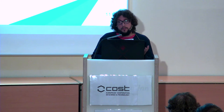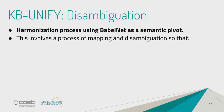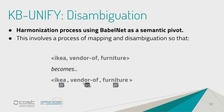We wanted to take all these heterogeneous sources of knowledge and filter them into a representation that BabelNet speaks. So the triple 'IKEA, vendor of, furniture' becomes IKEA mapped to its corresponding BabelNet synset, furniture mapped to its corresponding BabelNet synset, and then we create relation synsets — the same concept as synsets for concepts and entities, but for verbal predicates.